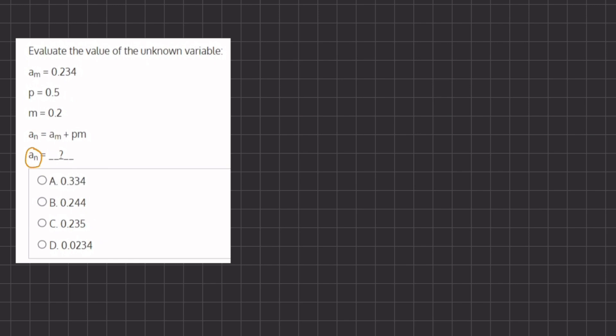Now the expression given for a_n is a_m plus p times m, so let's plug all those values in that we are given here, and we'll be able to find the value of a_n. So a_n equals a_m,